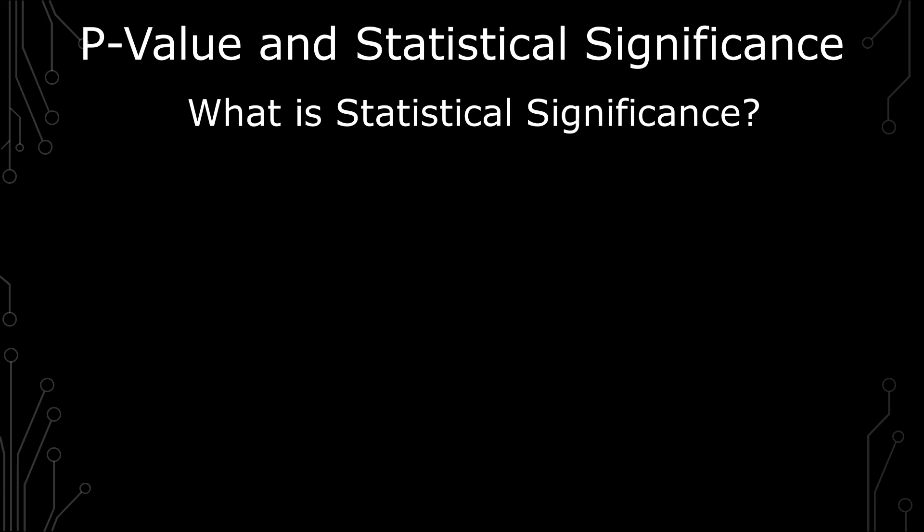The second part is statistical significance. So what's statistical significance? Statistical significance is when you have a p-value that is less than the alpha value.